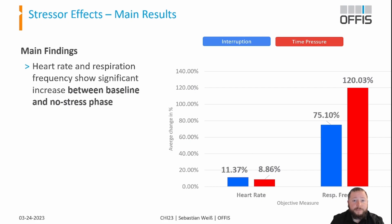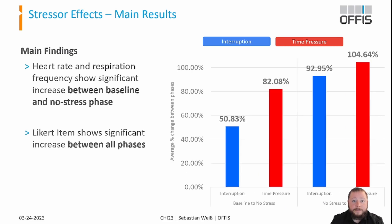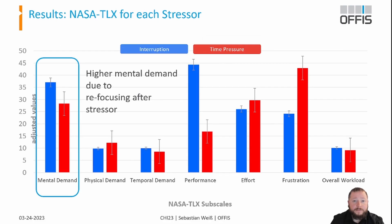Calculating mean percentage changes for the measures between phases lets us compare the effect of the stressors on the participants. This chart shows a significant increase in heartbeat and breathing frequency from the baseline to the no-stress phase. The stressors did not have a significant effect on the objective measures, probably due to a ceiling effect. However, the self-assessment shows a clear, even stronger increase in stress level when comparing the measures from the phase without stressors to the phase with stressors. The results of the NASA TLX show a higher mental demand for the interruption stressor, because participants had to refocus on the task at hand after the interruption.